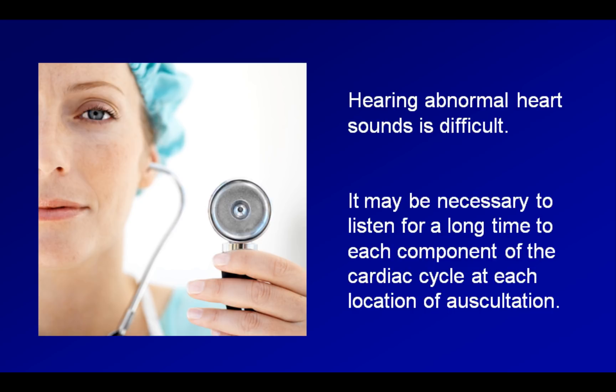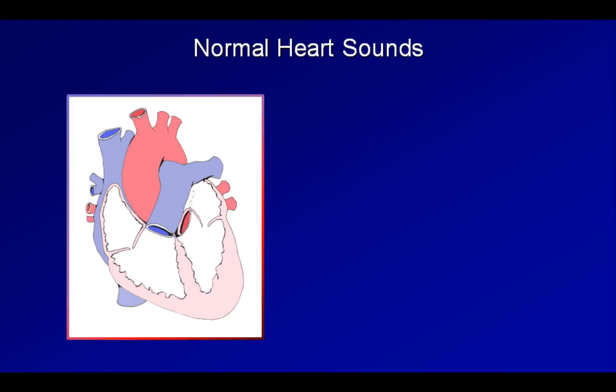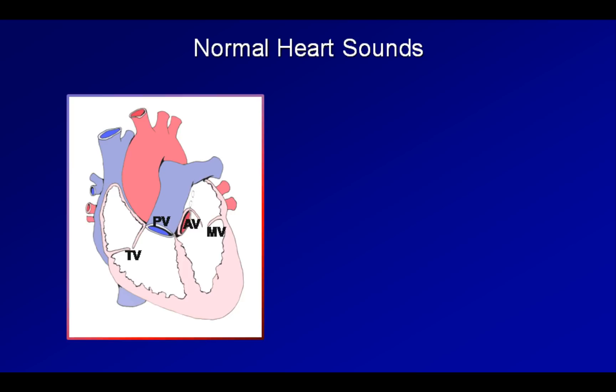Here is a basic schematic of the heart with the right atrium, right ventricle, left atrium, and left ventricle shown. Then here are our four valves: the tricuspid, the pulmonic, the aortic, and the mitral. The first of the two normal sounds is called S1. S1 is caused by and occurs essentially simultaneous to the closing of the mitral and tricuspid valves at the transition from diastole to systole.